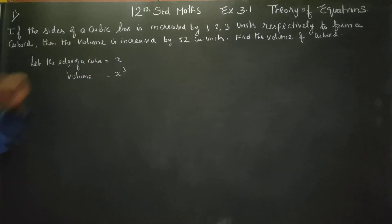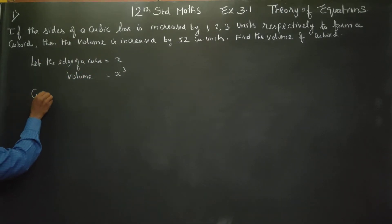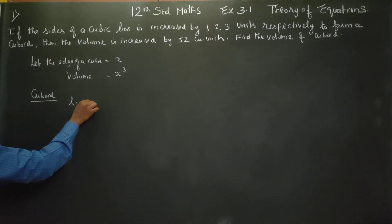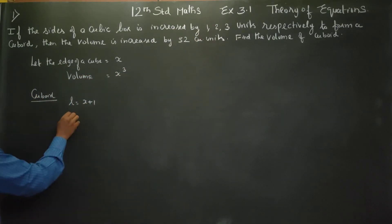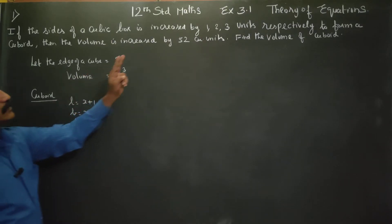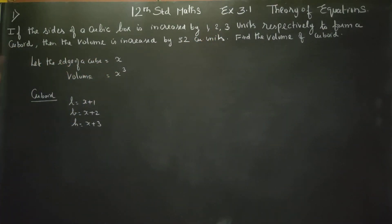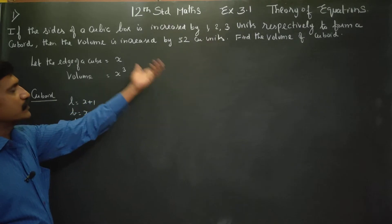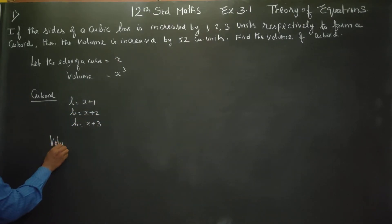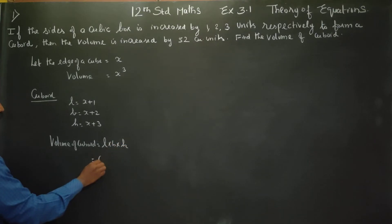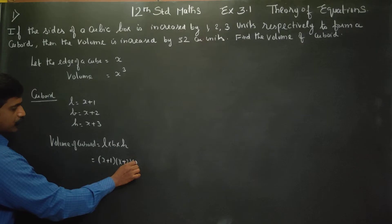Now, for the cuboid, the dimensions are length, breadth, and height. The sides are increased by 1, 2, and 3 units respectively to form a cuboid. The volume of cuboid formula is length × breadth × height, so the new volume will be (x+1)(x+2)(x+3).